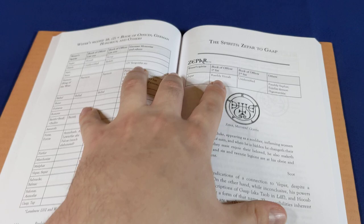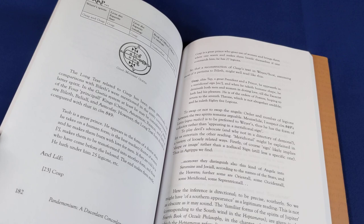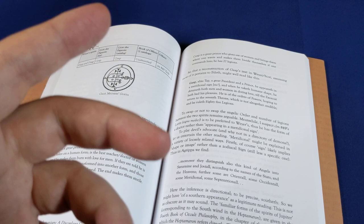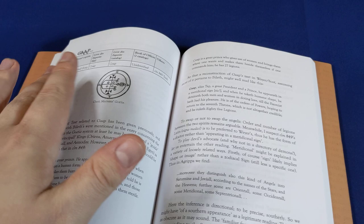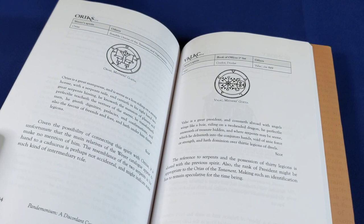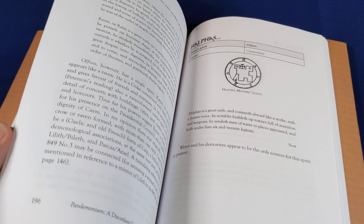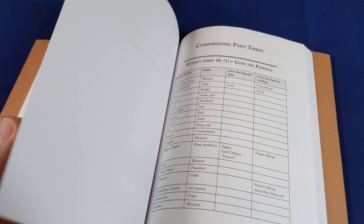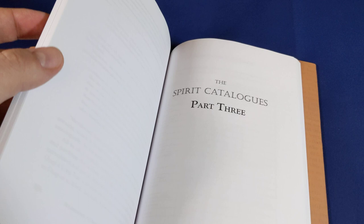So it is a catalogue of spirits giving their appearances in various grimoires, and then Jake Stratton Kent's thoughts on the reasons why there were differences between the sources and some extracts from the sources. This is very much Jake Stratton Kent's style.